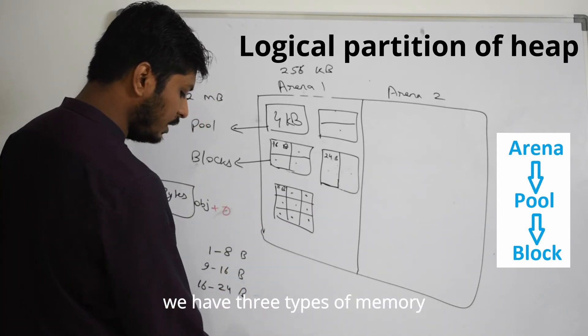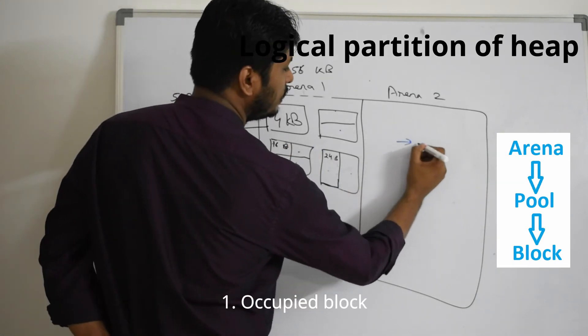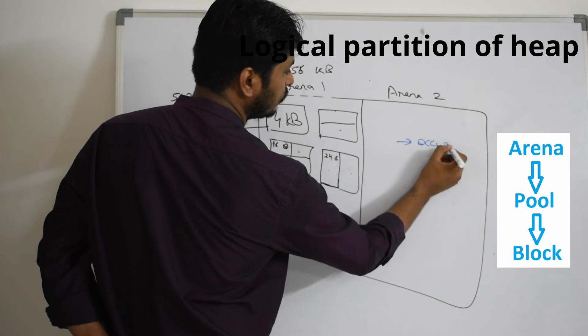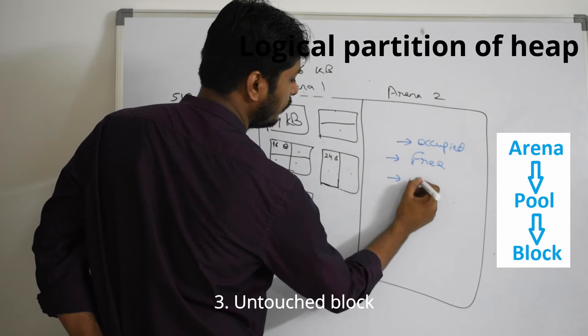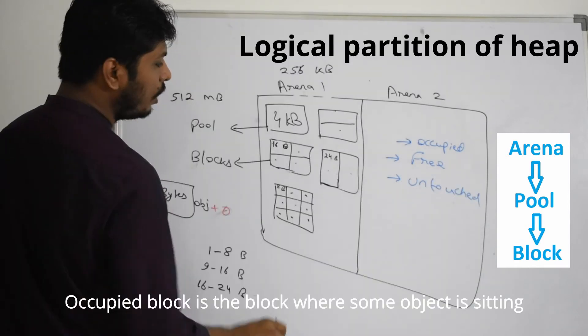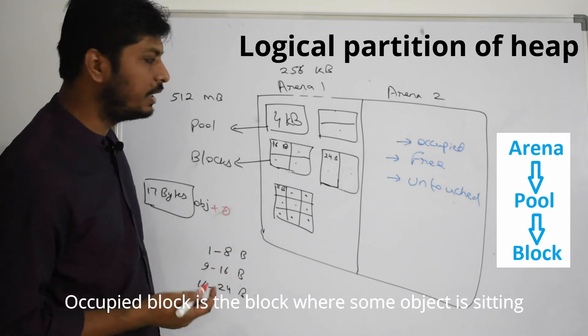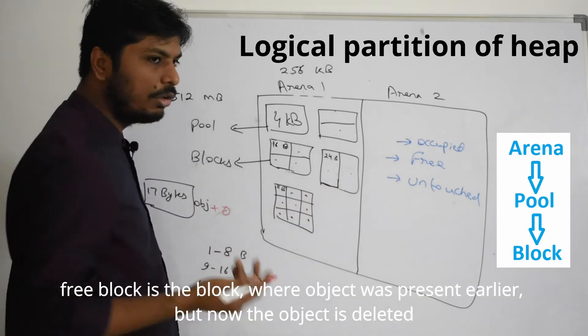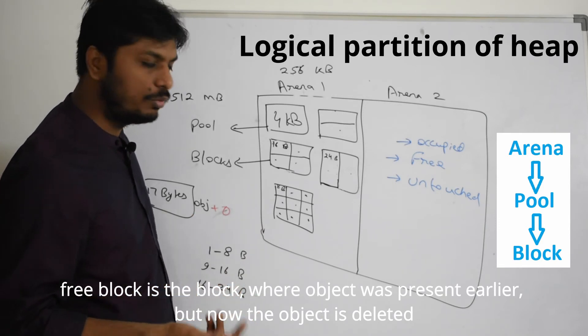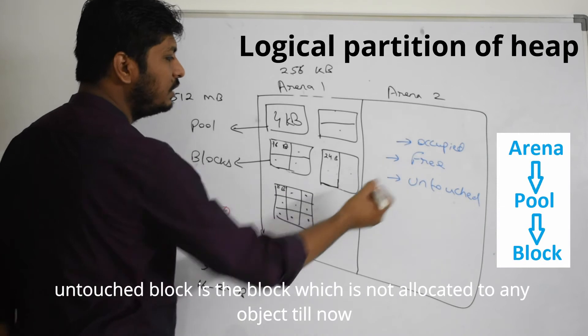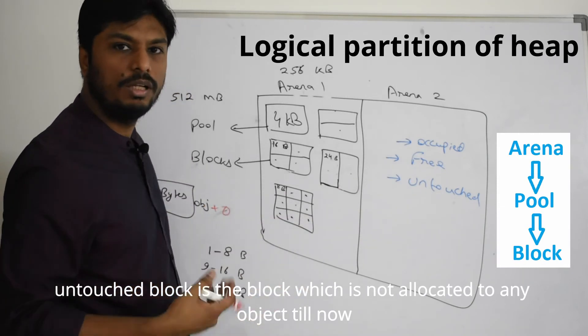We have three types of blocks: occupied, free, and untouched. Occupied block is where some object is sitting. Free block is where the object was present earlier but now it is deleted or removed. And untouched block is a block which is not allocated to any object till now.